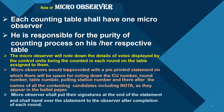Micro-Observer would be provided with a pre-printed statement on which there will be space for noting down the CU number, round number, table number, polling station number, and thereafter the names of all the contesting candidates including NOTA as they appear in the ballot paper.